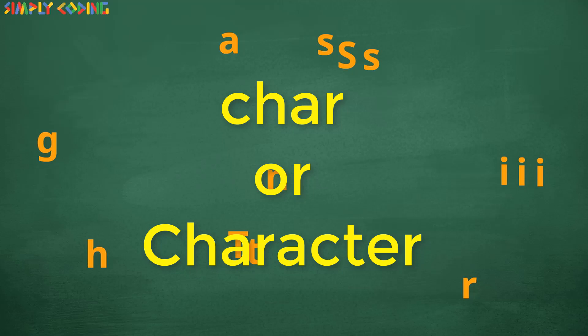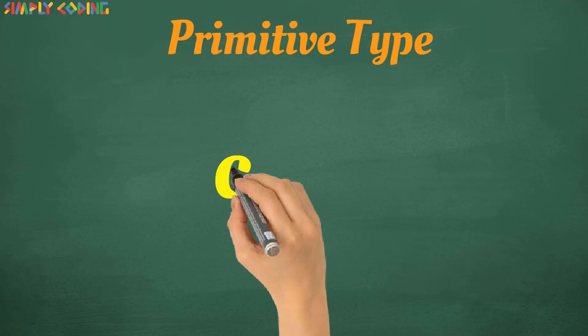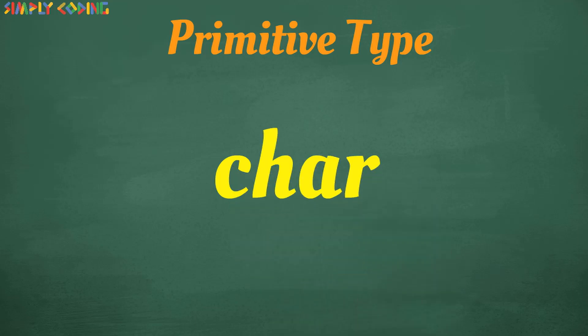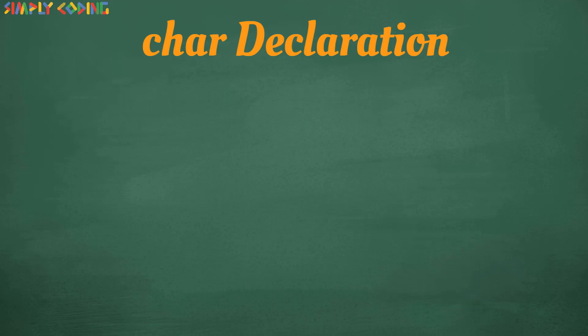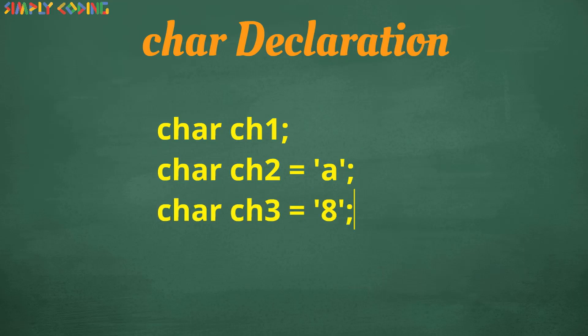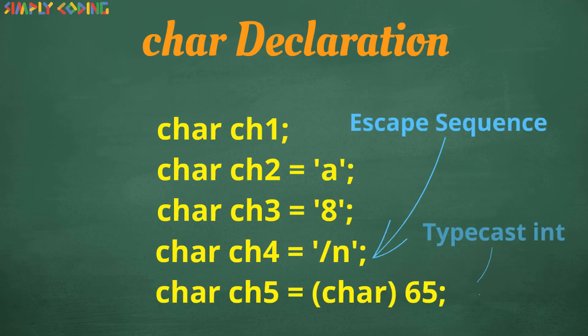Hence, it is important that you understand how char behaves first. First, let's look at primitive type char. There are various ways to declare a char variable. You can create it directly or assign a value to it during creation which can be character, number or escape sequence in single quotes or it can be typecasted integer.